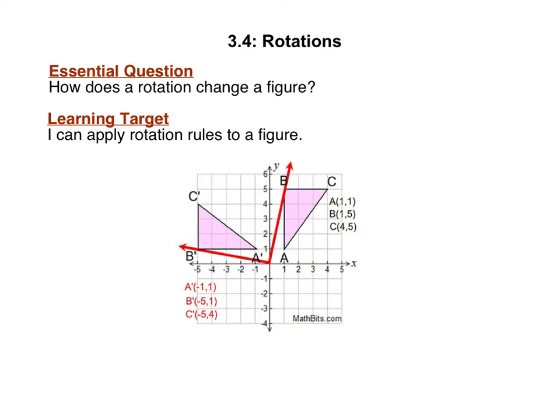When we rotate a figure, we turn it about a fixed point. In this picture, triangle ABC was turned 90 degrees counterclockwise about the origin.